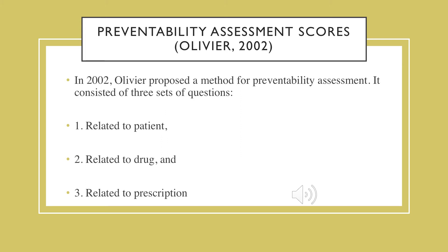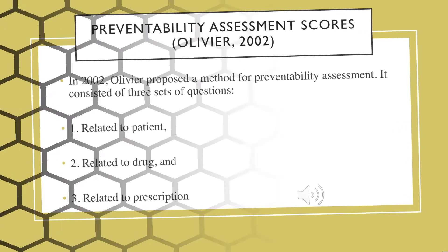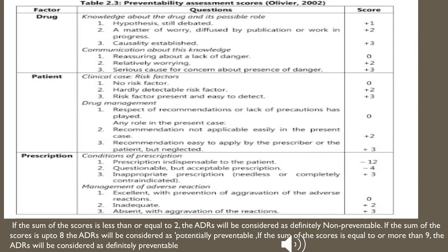In 2002, Oliver proposed a method for preventability assessment. This scale has three sets of questions related to the patient, drug, and prescription, with a scoring system. If the total score is less than or equal to two, the ADR is non-preventable. If up to eight, it is potentially preventable. If more than nine, the ADR is definitely preventable.